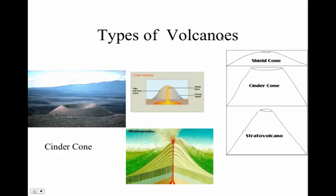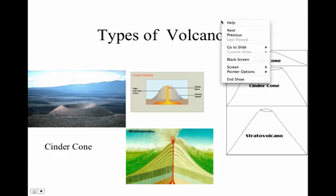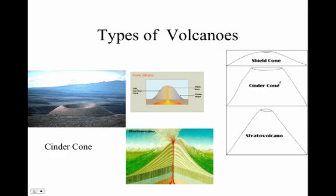There are three types of volcanoes we need to be aware of. One is called a shield cone, and a shield cone mostly gives off lava and is usually associated with more gentle eruptions. The lava oozes out and comes down, creating a gentle, not very steep slope. Shield cones are easy to identify because they are very gently sloped, because lava is usually what comes out of them.